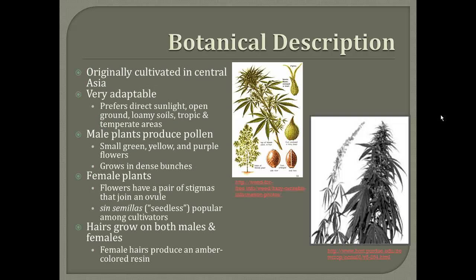Cannabis sativa was first cultivated in Central Asia, but it's now cultivated in India, Europe, and the Americas. It's a really adaptable plant and can grow in altitudes up to 8,000 feet in poor soil and with little water, but usually it prefers direct sunlight, open ground, and loamy soils, and it grows best in tropic and temperate areas. It's also mainly a dioecious plant, but monoecious plants also exist.